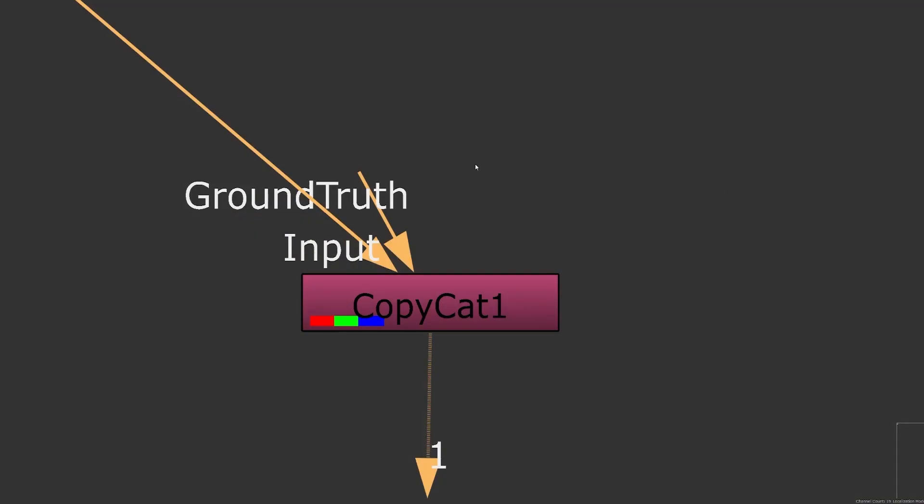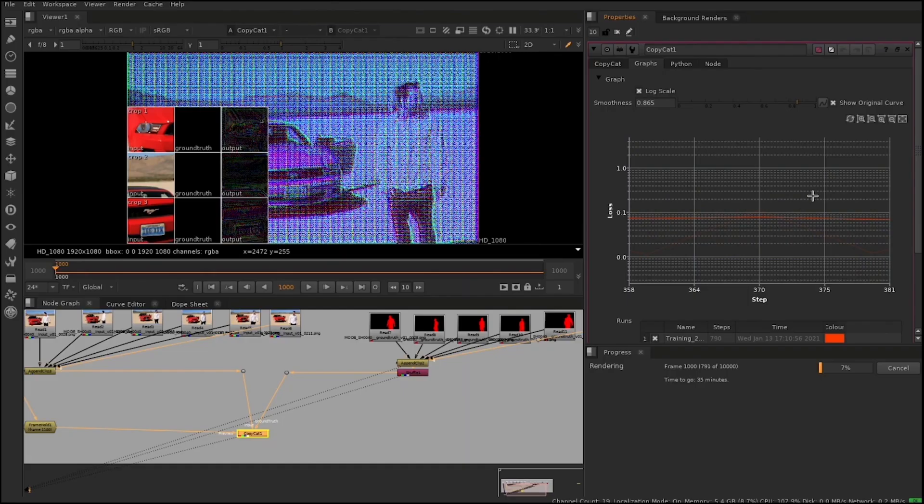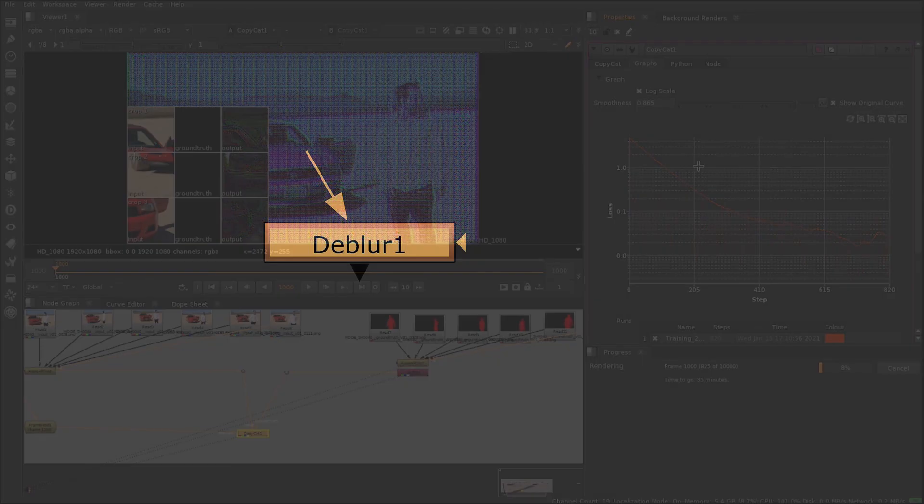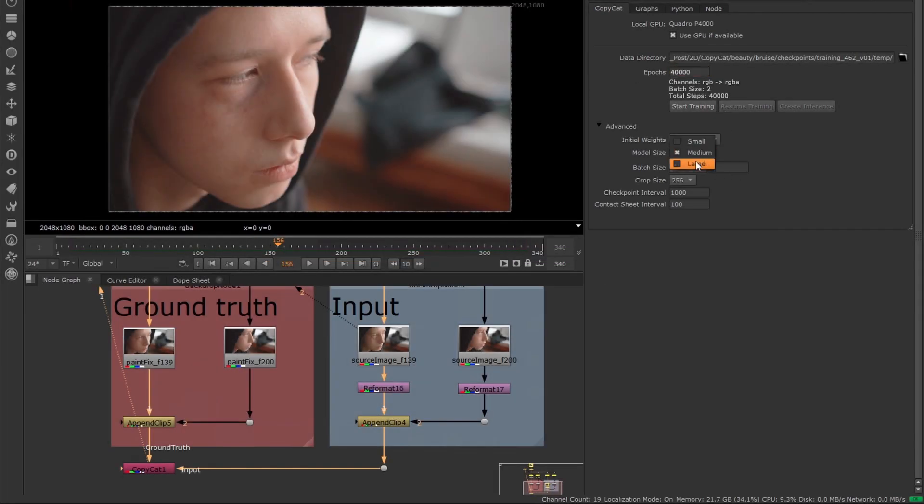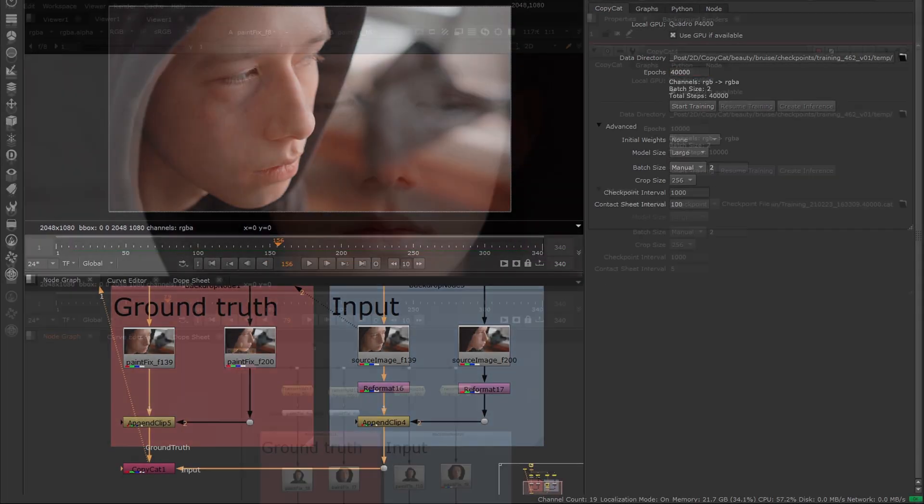In compositing, we always have a desired result, so we provide Nuke's Copycat node with the ground truth. We can then train the node knowing what we want for the output. There's no limit to what effects Copycat can be used for. The pre-trained DBlur and Upscale nodes are great examples of results you might want to produce. Think about how long certain tasks would take and how machine learning in Nuke will save you time and effort.